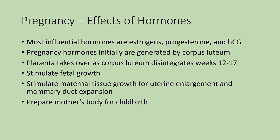With pregnancy, the most influential hormones are estrogen, progesterone, and HCG. The pregnancy hormones are initially generated and produced in the corpus luteum — what's left over after ovulation, the remaining supporting cells of the follicle. If fertilization and implantation are successful, the corpus luteum initially produces these pregnancy hormones. Once the placenta is developed — usually around weeks twelve to seventeen — the corpus luteum disintegrates and the placenta takes over the production of those pregnancy hormones.